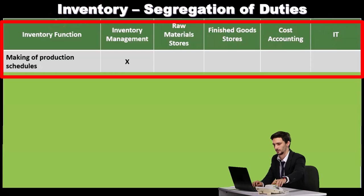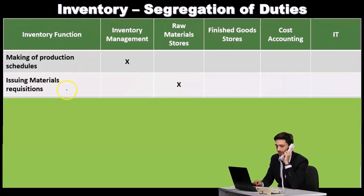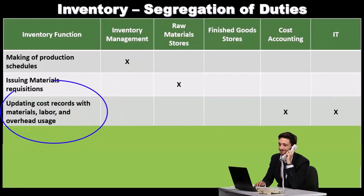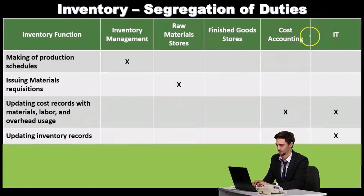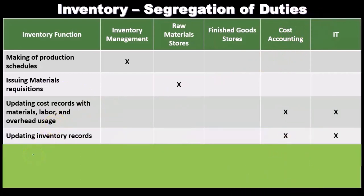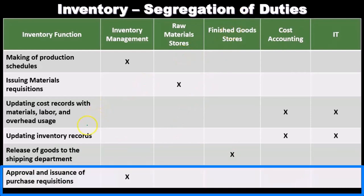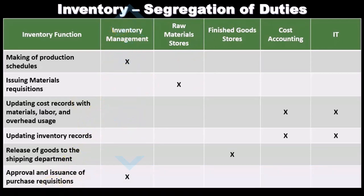The function of making production schedules falls under inventory management. Issuing materials requisitions is under raw materials stores. Updating cost records with materials, labor, and overhead usage is within cost accounting, often assisted by IT. Updating inventory records is in cost accounting and IT. Release of goods to the shipping department falls under finished goods stores. Approval and issuance of purchase requisitions is handled by inventory management.